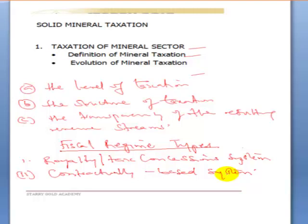The contractually-based system can be likened to the production sharing contract used in the petroleum industry, but it is unusual to use this system in the mining sector, although practice varies between developed and developing countries. In developed countries, fiscal terms for mining investments are usually legislated unilaterally, but in many developing countries, terms are set out in project-specific negotiated mining agreements. Nigeria's use of production sharing contracts is an example of this contractually-based system.